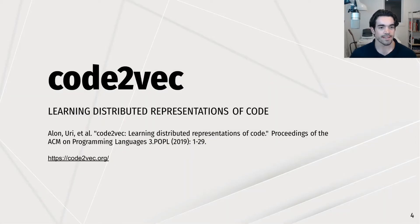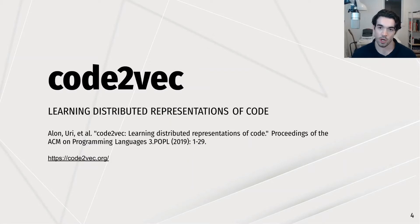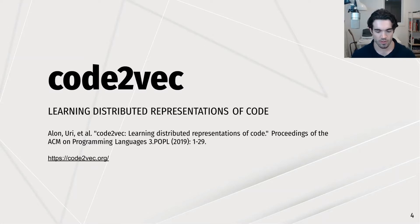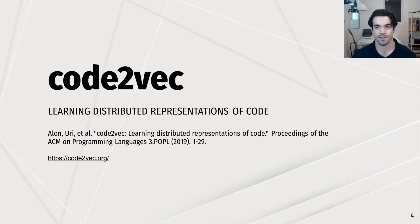So enter Code2Vec. Code2Vec is a recently published approach to learn code embeddings. The authors trained a neural network on the task of predicting the name of a method given the code inside. They did this as it's somewhat of a proxy for code semantics, and I'd highly recommend visiting their website — they've got some great demos on there.